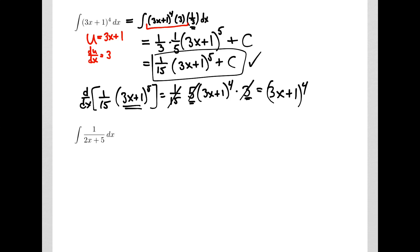Let's look at our next example. I've got an integral of 1 over an expression, and so that makes me think of the logarithm's derivative. The derivative of a logarithm is 1 over u times du dx. Here, our expression u is 2x plus 5. Its derivative would be a 2. And we can see that we don't have that derivative in our formula.